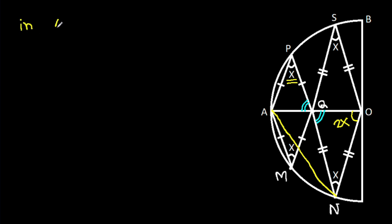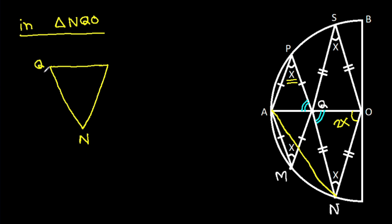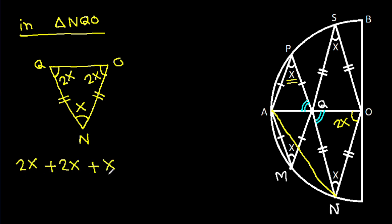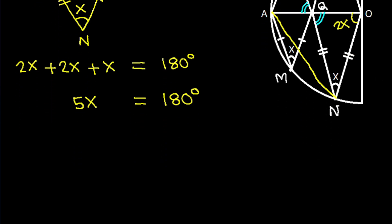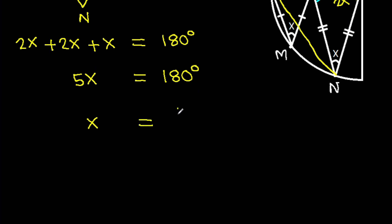The interior angle NQO: NQ is equal to NO, so these two angles will be equal, and this angle is 2X, so this angle will also be 2X. And this angle is X. So 2X plus 2X plus X equals 180 degrees. So X equals 36 degrees.